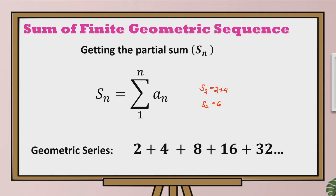How about getting the sum of the first five terms? So we have S sub 5, that means getting the sum of the first five terms equals 2 plus 4 plus 8 plus 16 plus 32. Adding all these numbers, we have the sum of the first five terms equals 62.